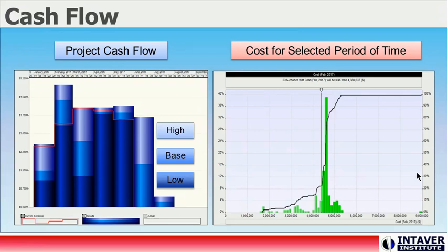The cash flow chart shows probabilistic cash flow over a set period periodicity — months, bimonthly, quarterly, or annually. In this particular view, we can see that in the period of February, there is a high probability that costs will be well above the current forecast due to risk. In addition, we can see that because of delays, the project should expect to experience two additional months of costs.